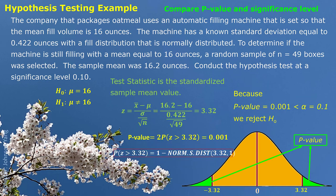We can also use a different approach: calculate the p-value based on the test statistic. Since the model is symmetrical, we have 3.32 and negative 3.32, which identifies the center area. The probability that the standardized sample mean falls in the two-tailed green area is the p-value, which is 0.001. This can easily be done in Excel. Since 0.001 is smaller than the significance level, we also reject the null hypothesis.